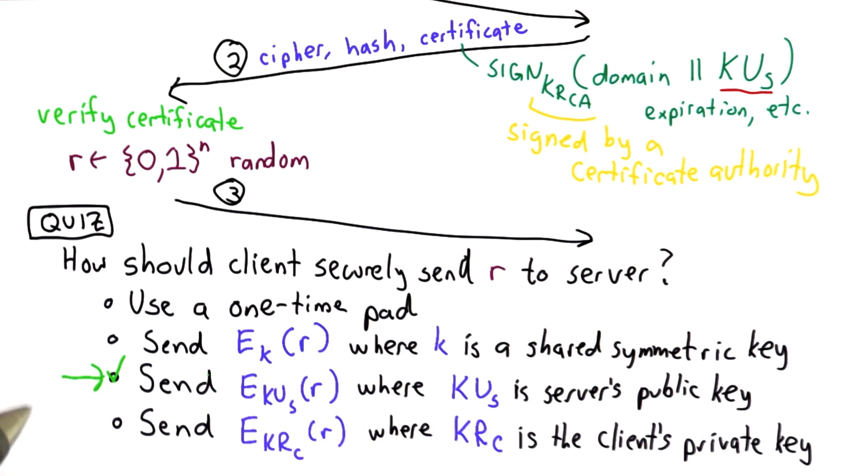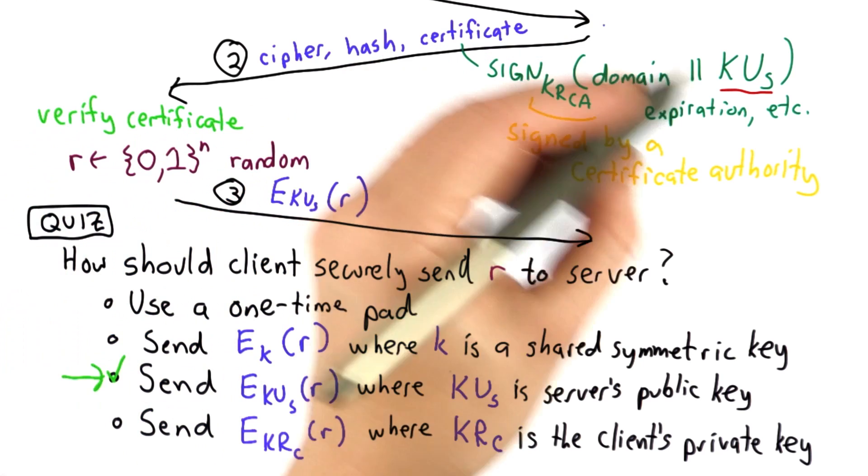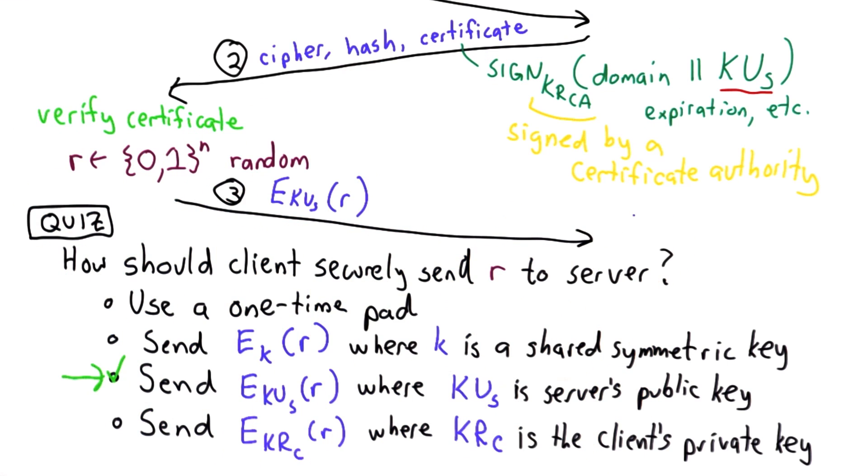So the right answer is the third one, that we want to send the random value encrypted so it can't be intercepted, but that it can be decrypted by the server, and the server has the corresponding private key to decrypt this.